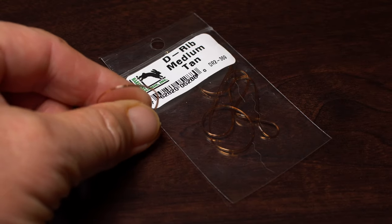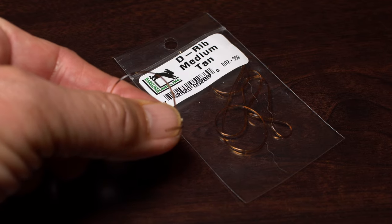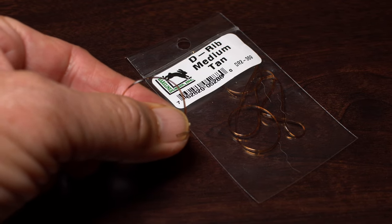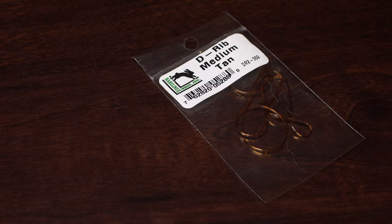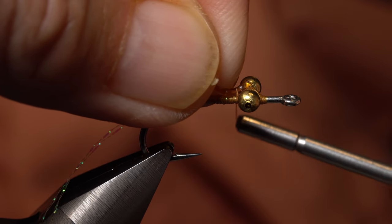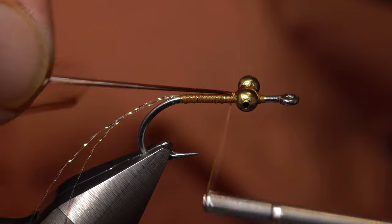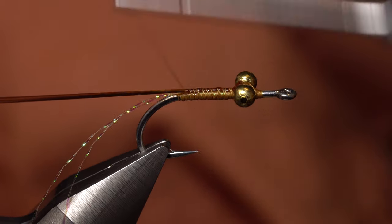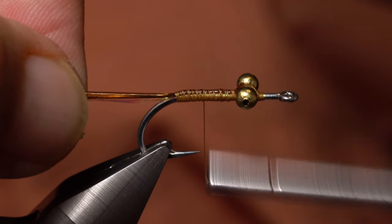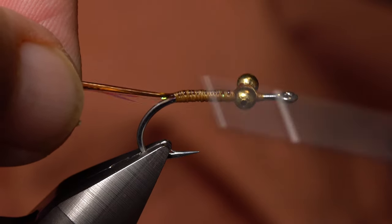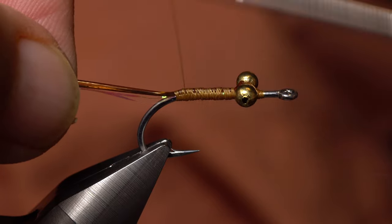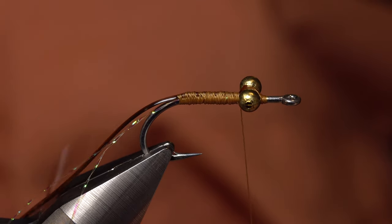Medium-sized Tandy rib is used to make the outer shell of the body. A 5 to 6 inch length should be plenty. With the flat part of the rib facing down, tie in one end so it rests against the back edge of the bead chain eyes. Take tight thread wraps to secure it directly to the top of the hook shank, all the way back to the start of the bend. You can then use open spiral wraps of tying thread to continue building the underbody of the fly.